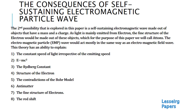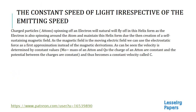One of the consequences of all this is a new description of antimatter, a more detailed structure of the electron, and it can explain other things like the redshift. Having said this, let's now go to the last and final slide: the constant speed of light, irrespective of the emitting speed.